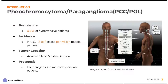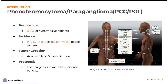Beginning with pheochromocytoma, it is a tumor that arises from the chromaffin cells of the adrenal medulla. The adrenal glands sit on top of the kidneys and are important in making stress hormones such as epinephrine and norepinephrine. There are also extra-adrenal pheochromocytomas called paragangliomas that arise from the sympathetic and parasympathetic chain ganglia, which extend from the base of the skull down to the pelvis. The incidence is about two to eight cases per million people per year, and the prevalence is about 0.1% of hypertensive patients.